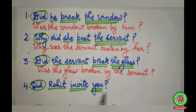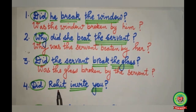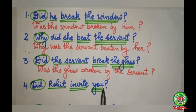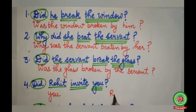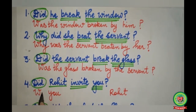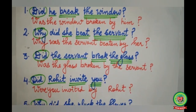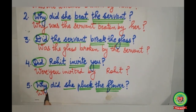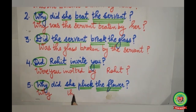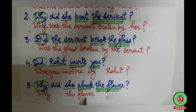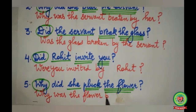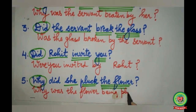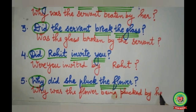Third question: 'Did the servant break the glass?' Subject single underline. 'Glass' is the object — triple underline. 'Glass' will come to the beginning. 'Was' is the helping verb since 'glass' is singular. Passive: 'Was the glass broken by the servant?' Fourth: 'Did Rohit invite you?' 'You' will come to the beginning. 'Rohit' will go to the last. With 'you' we use 'were'. Passive: 'Were you invited by Rohit?' Last: 'Why did she pluck the flower?' Passive: 'Why was the flower plucked by her?'